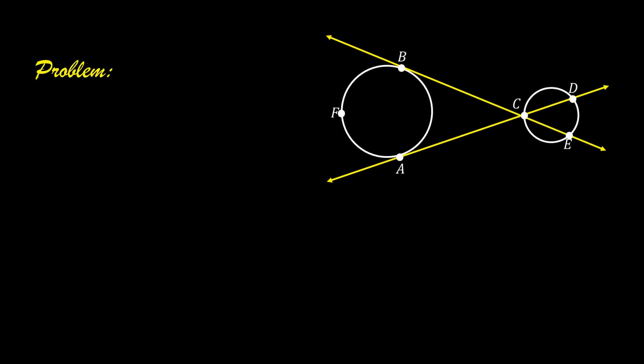Let us solve this problem. If the measure of arc AFB is equal to 220 degrees, find the measure of arc DE.